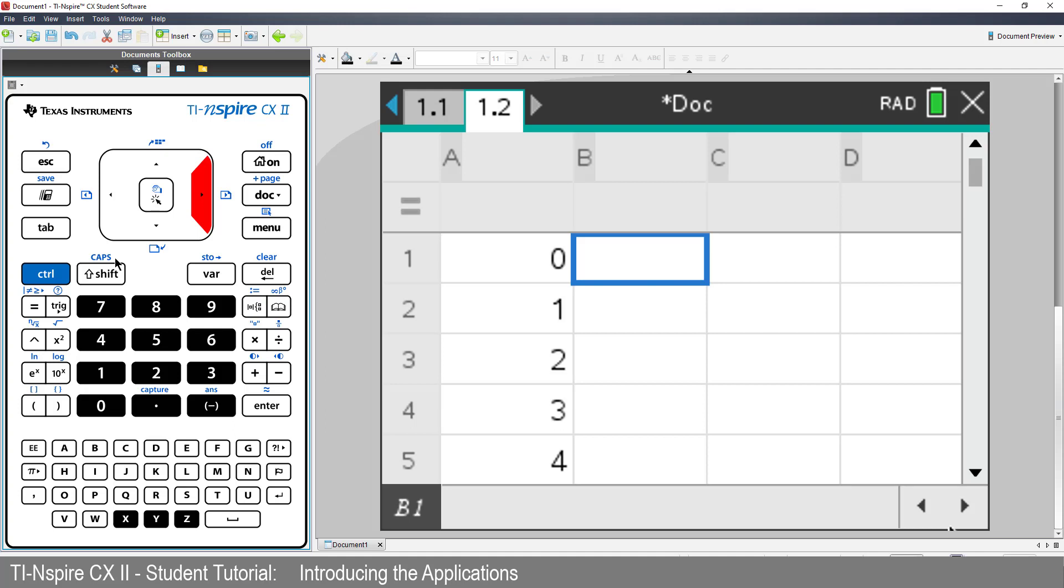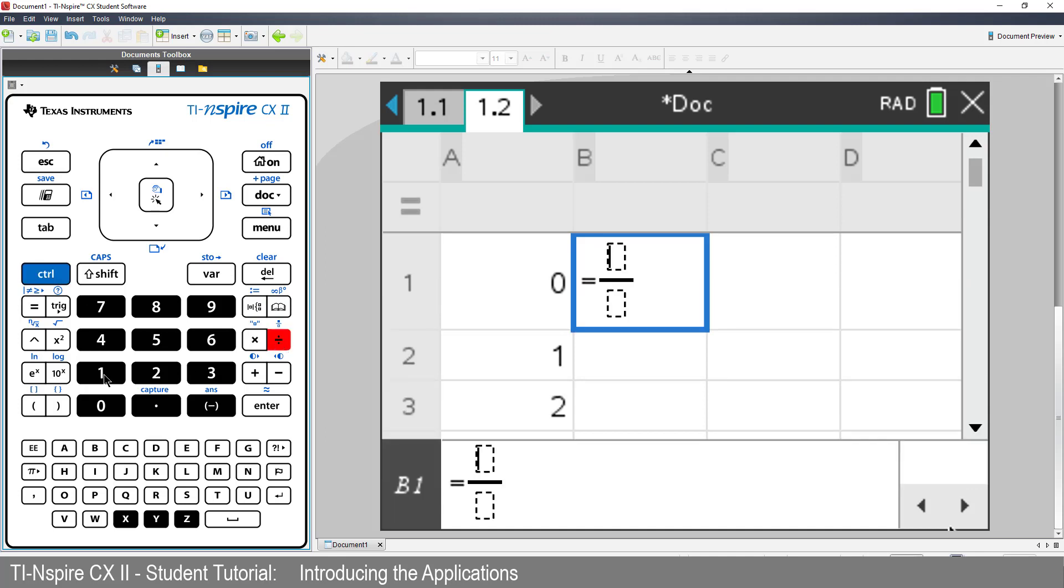Now navigate across to cell B1. We're going to put a formula in here. And just like Excel, formulas start with an equal sign. I want to write a fraction. Press Control followed by Divided. I'll calculate 1 divided by, and press Tab to navigate down to the denominator. The quantity in cell A1. Factorial.